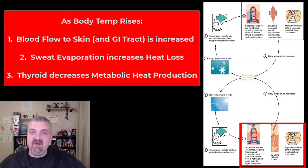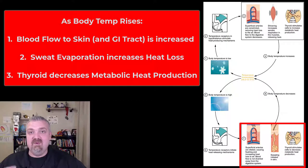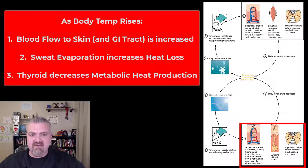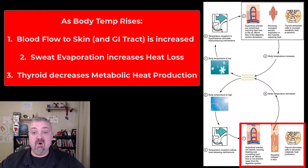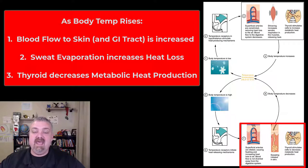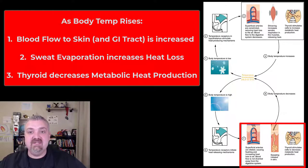Sweat evaporation is dependent on humidity. If it's very humid out, sweat evaporation won't work very well — you'll sweat a ton but it won't be effective. Third, the thyroid is going to turn itself down to decrease metabolic heat production, and that should bring your temperature back to normal. If you can't get out of the heat, that can lead to heat-based illness. If you sweat so much that you become dehydrated and can't sweat anymore — your skin gets hot and dry — that can certainly lead to heat stroke. Humidity is a key player there.